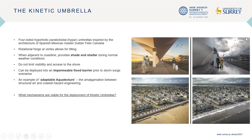When kinetic umbrellas are placed adjacent to urbanized shorelines, they provide shade and shelter without limiting access to the coast, unlike a typical flood wall, for example. Due to the hinge, they can be deployed to form a physical barrier to protect communities from storm surge flooding. Hence, kinetic umbrellas are an example of adaptable architecture, which represent the amalgamation between structural art and coastal hazard engineering.